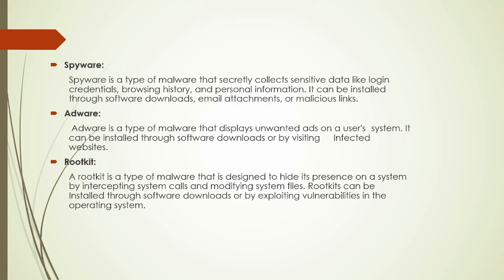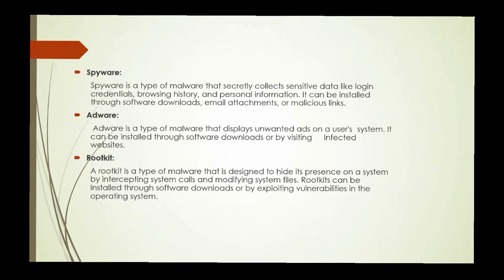Rootkit: A rootkit is a type of malware designed to hide its presence on a system by intercepting system calls and modifying system files. Rootkits can be installed through software downloads or by exploiting vulnerabilities in the operating system.